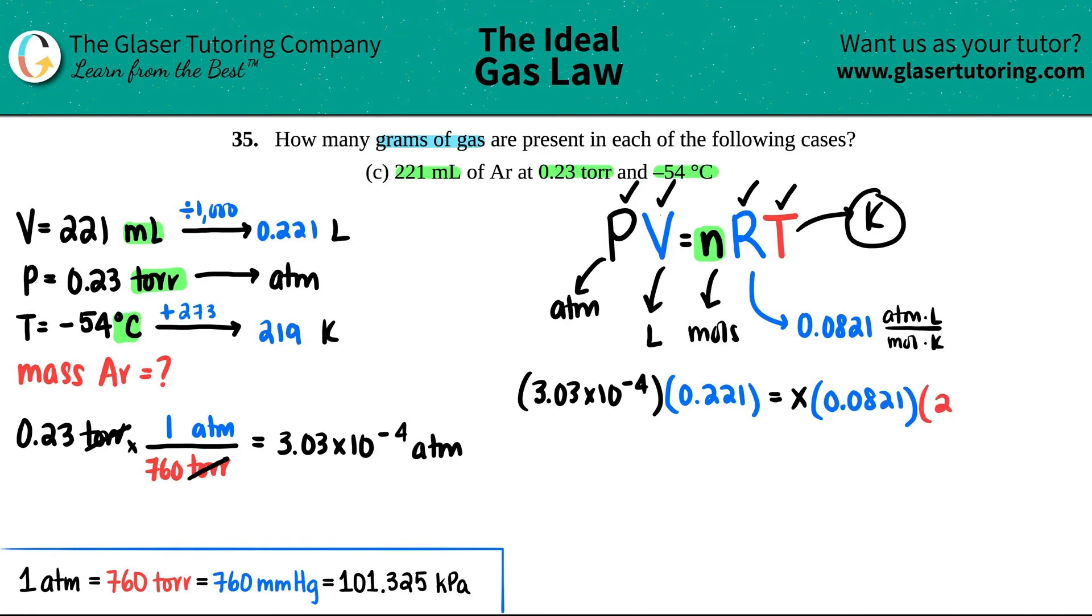And the temperature is 219 kelvin. You could get this as one number, get this as one number, and then do your algebra. For the simplicity of this video, I'm just going to divide by these two values. I'm going to divide by 0.0821 and then by 219. This goes bye-bye and this goes bye-bye, and now we just have x.